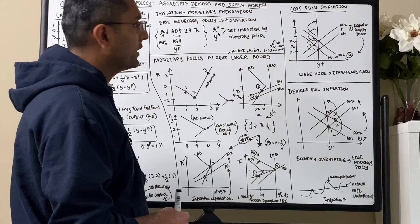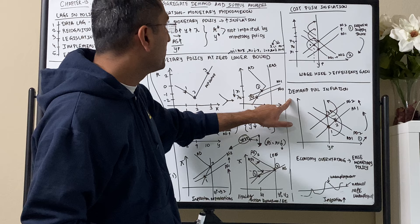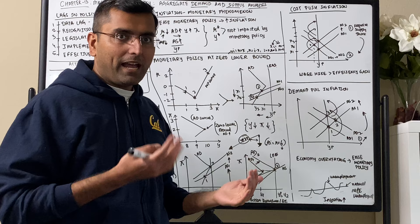Taylor's Rule can't be put on autopilot for the reasons I shared, and active policy is much better. So now, what are the types of inflation? There are two types: cost-push inflation and demand-pull inflation.